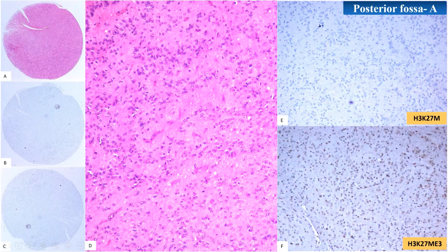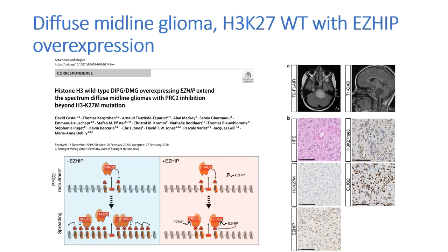It had been reported in other studies that these tumors overexpress a protein called CXORF67, but its function was not known at that time. In 2019, an article published in Nature showed that CXORF67 inhibits EZH2, a DNA methyltransferase subunit of the PRC2 complex, thereby preventing methylation of the histone residues. Consequently, CXORF67 was renamed as EZH2 inhibitory protein, shortly called EZHIP. Hence, in the 5th edition, diffuse midline gliomas with H3 wild-type and EZHIP overexpression have been recognized and are considered as WHO grade 4 with equally poor prognosis like H3K27M mutant tumors.